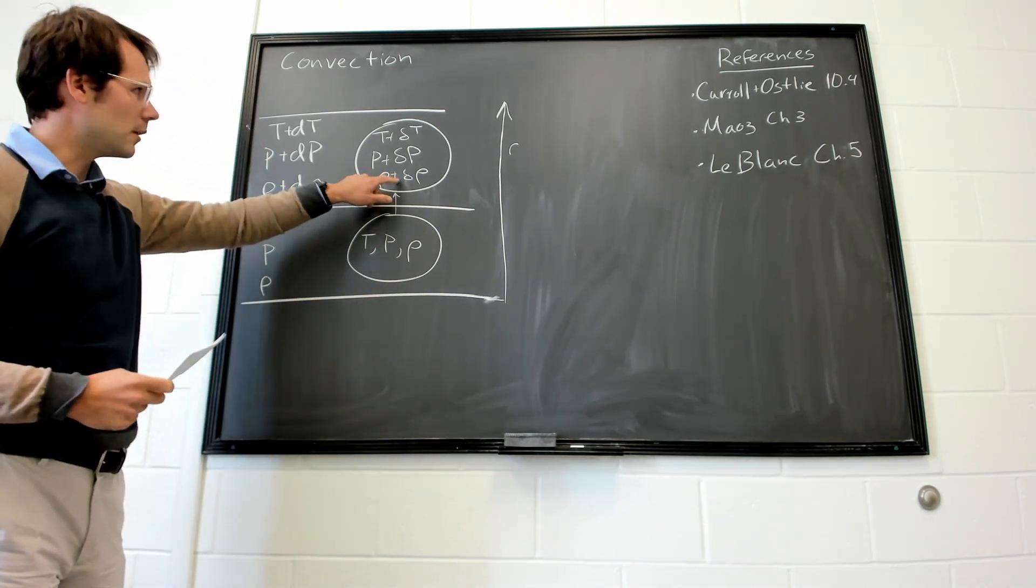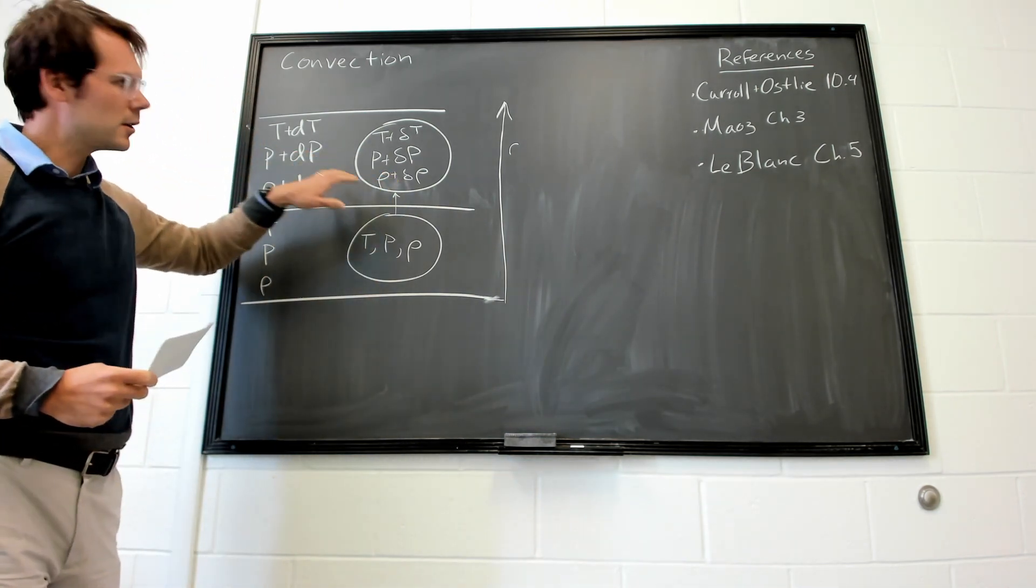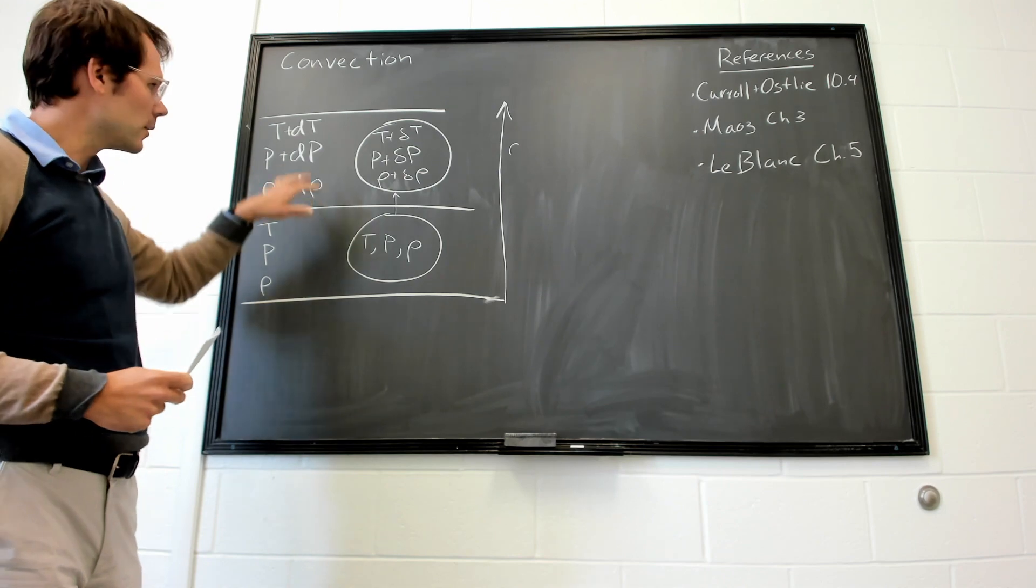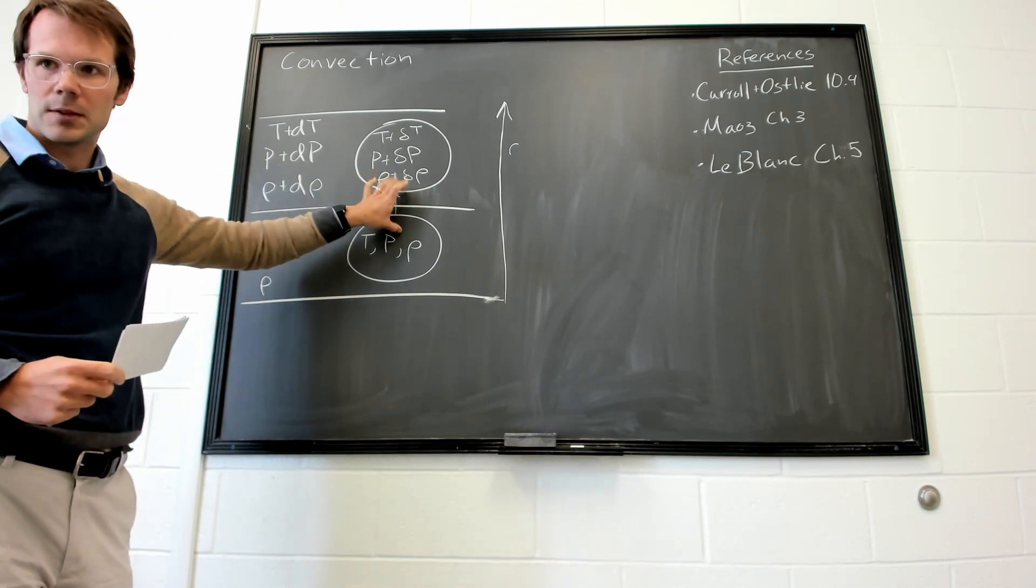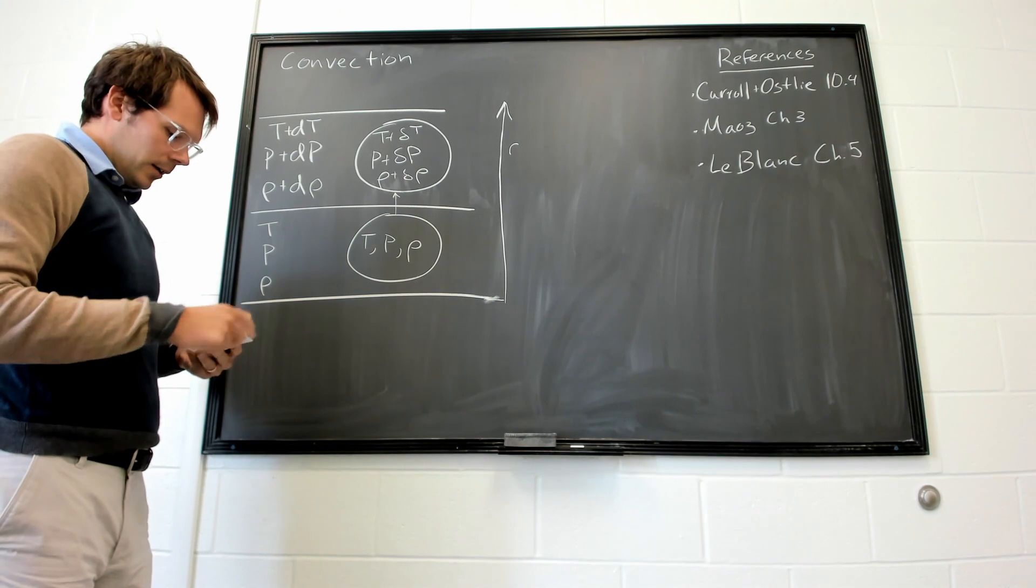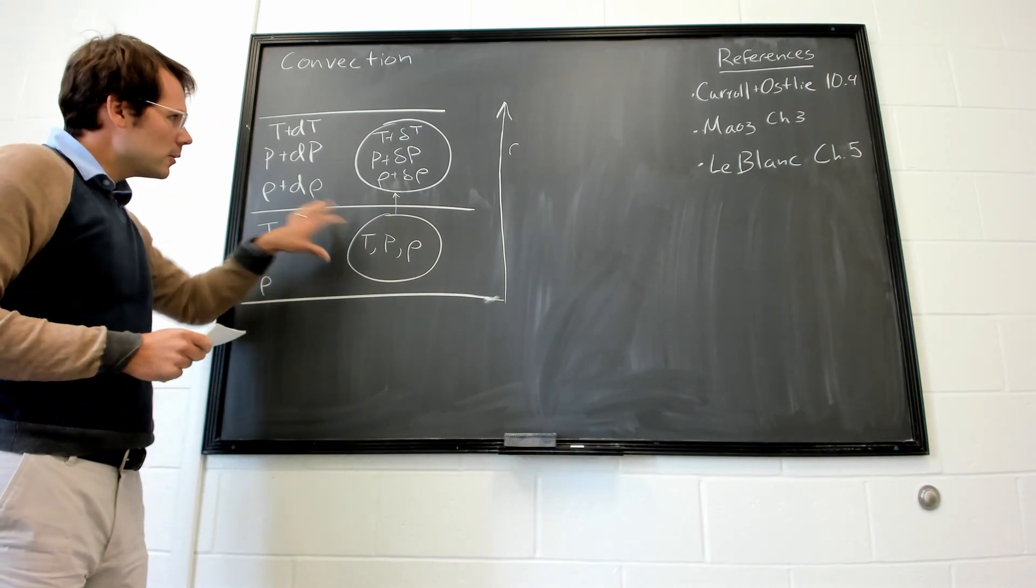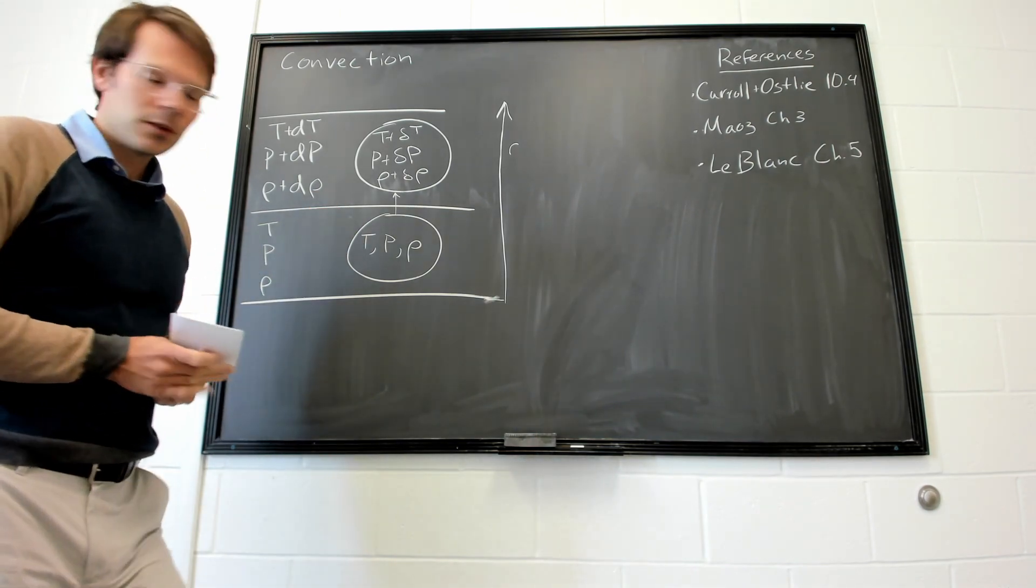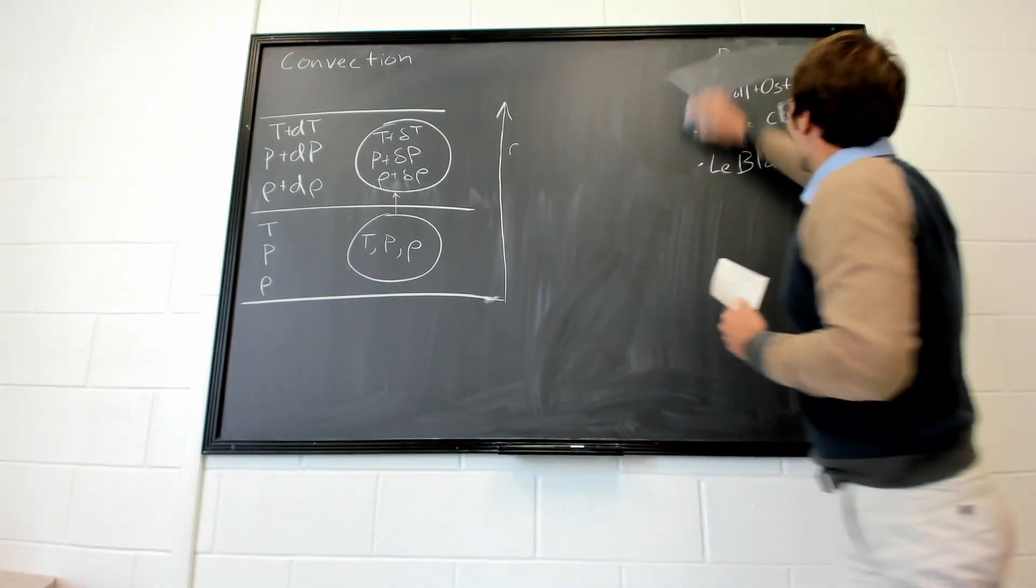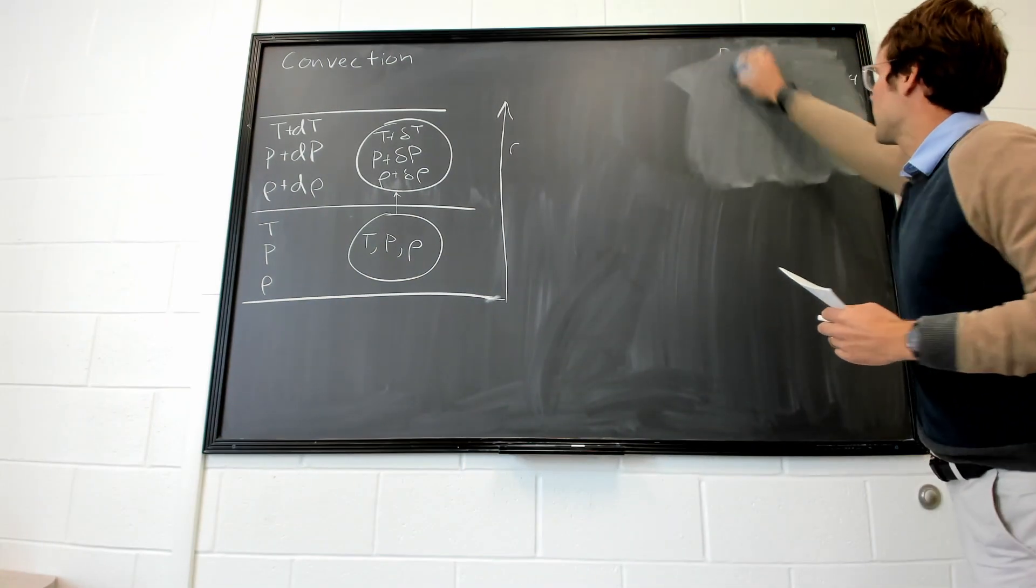And here we're using the differentials of delta as opposed to d just to help us keep track of whether we're talking about the stellar atmosphere or this cell itself.